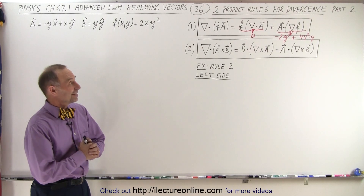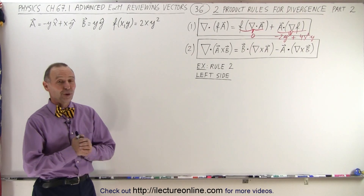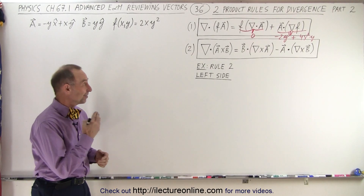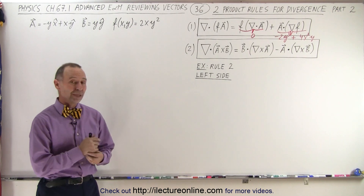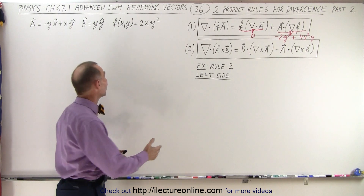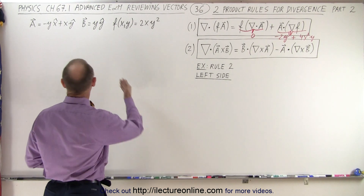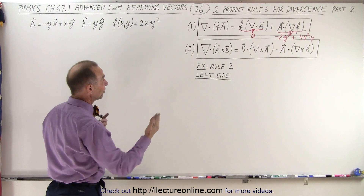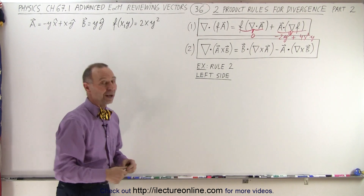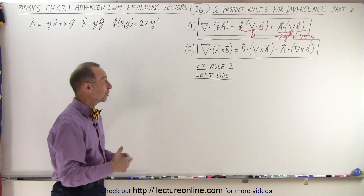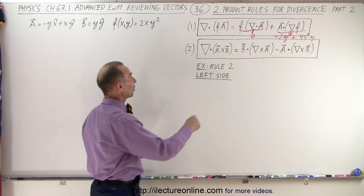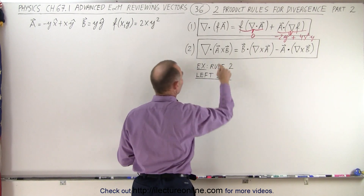Welcome to ElectronLine. We're going to show an example of the second rule being correct by simply plugging in what we have for A and B vectors and see if the left side does indeed equal the right side. So we're going to start with the left side and begin with A cross B.